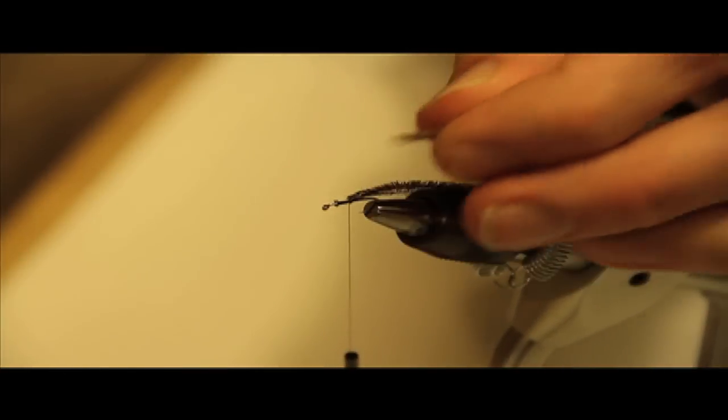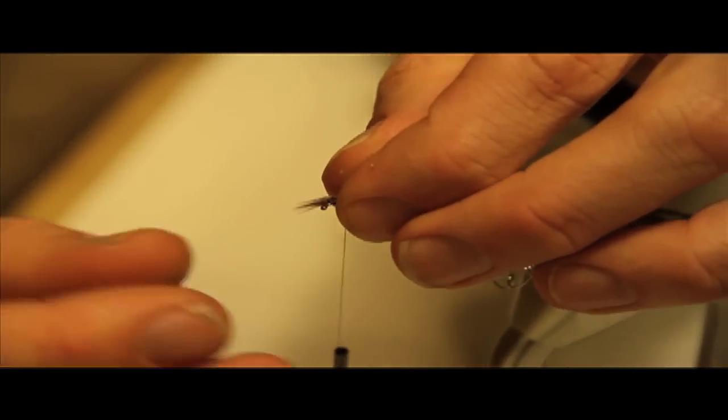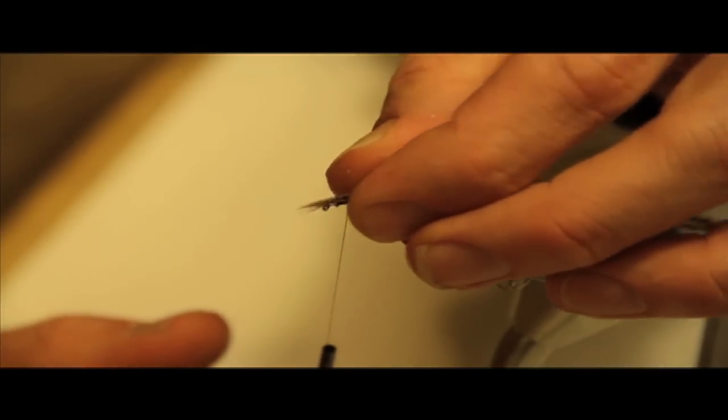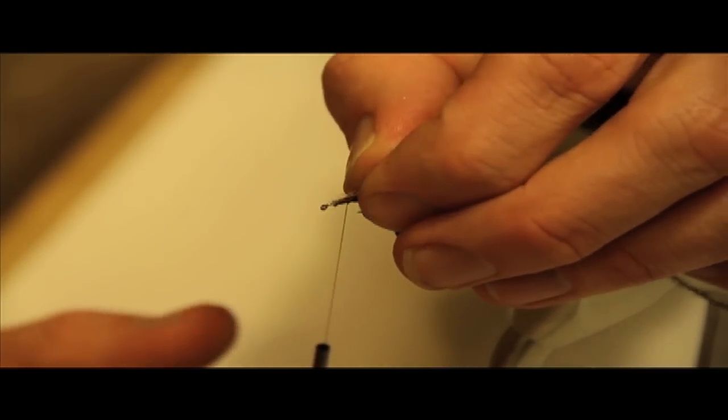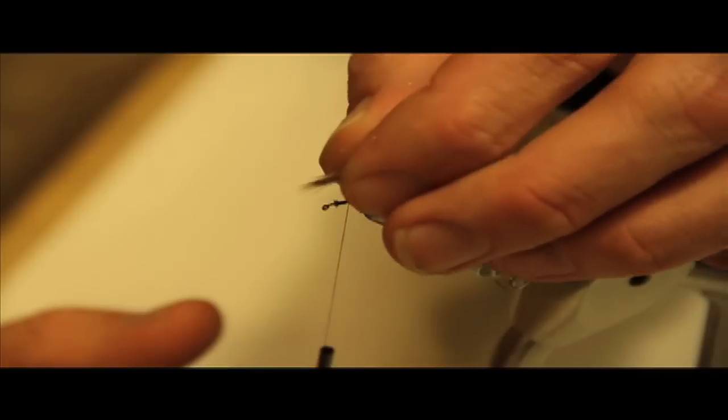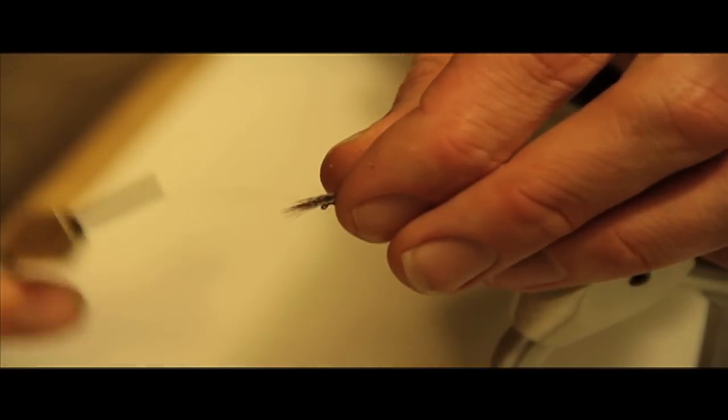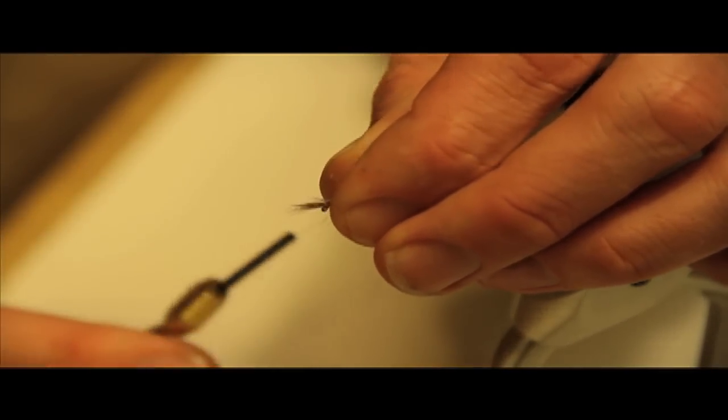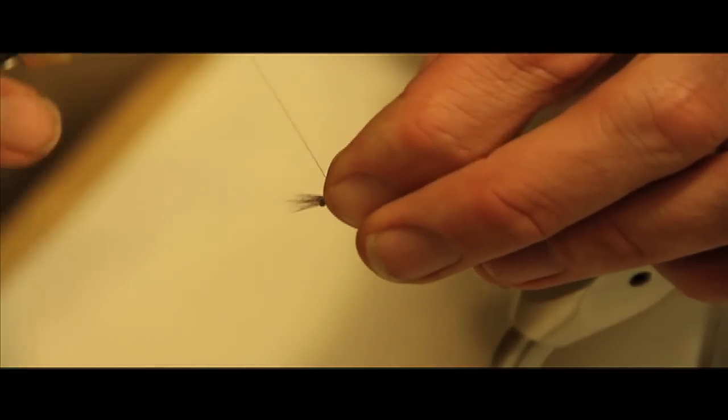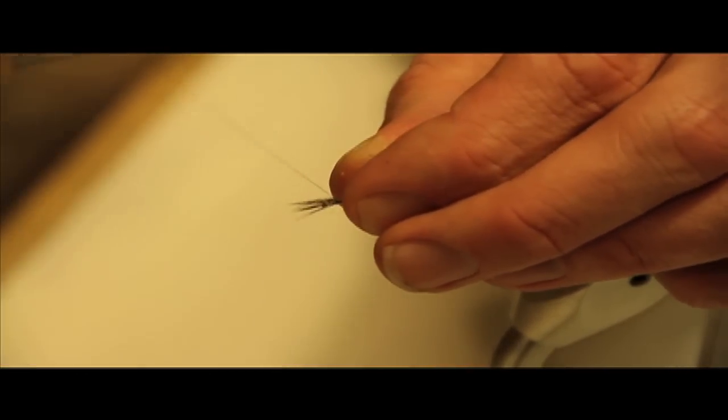Then what we're going to do is we're going to take and tie those in facing forward, sticking up about the same way or the same distance as that halfway point on the fly. So that's going to stick out the front.